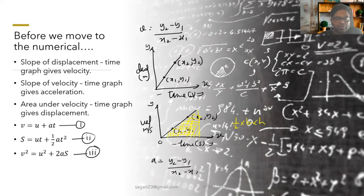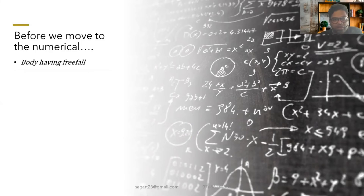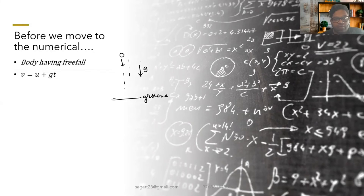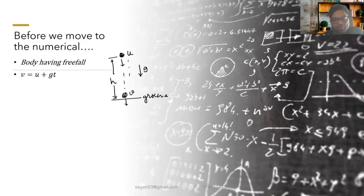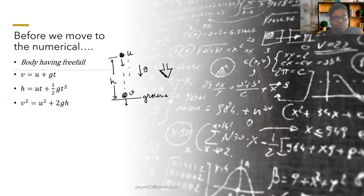When gravity is considered, for a body in free fall coming downward: gravity acts downward, the initial velocity u is at the top, the final velocity is just before hitting the ground, and the distance covered is the height h. Since everything is in the same direction (downward), no sign convention is needed — just replace s with h and a with g.